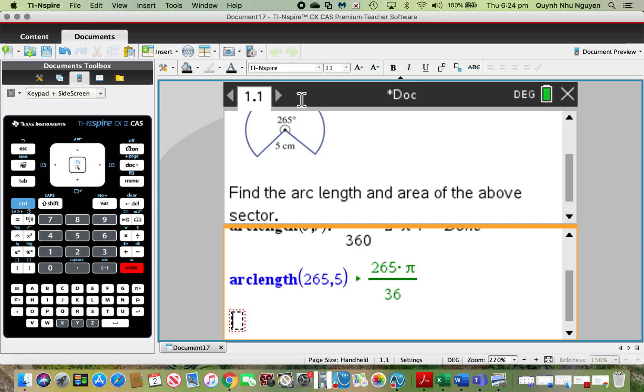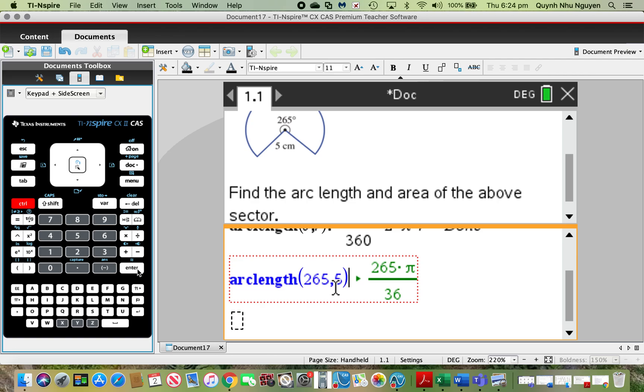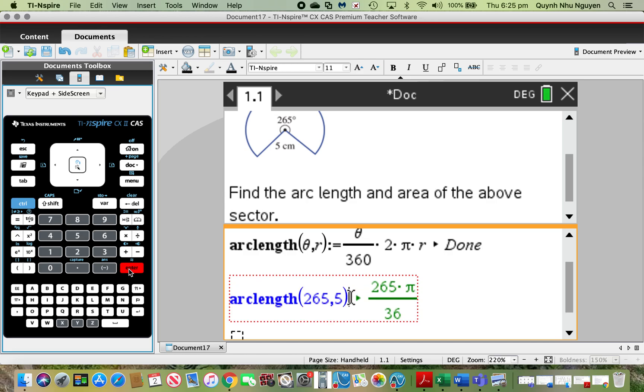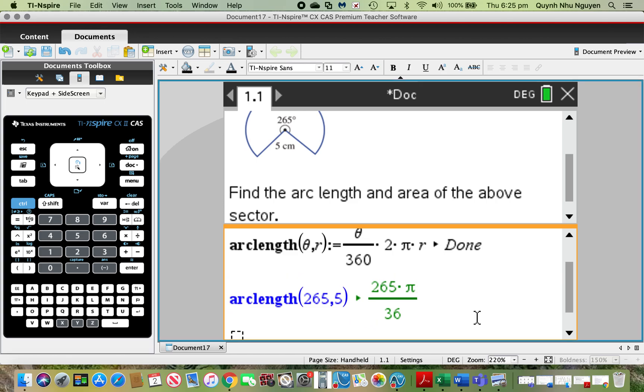Sometimes you might need to convert this answer to a decimal or approximate answer. Go back to this math box and toward the end of your input—the input is whatever is highlighted in blue—press ctrl enter and that will convert it to a decimal answer. Alternatively, if you want to convert the decimal answer back into exact form, press your cursor at the end of the input and go ctrl enter enter, and that will bring it back into exact form. That's a little template for you to work out the arc length of your sector.